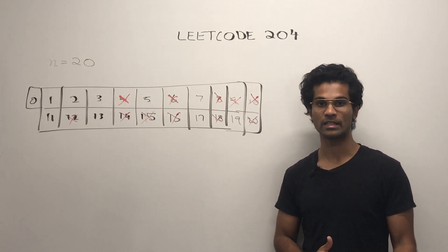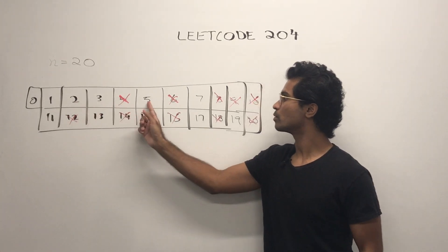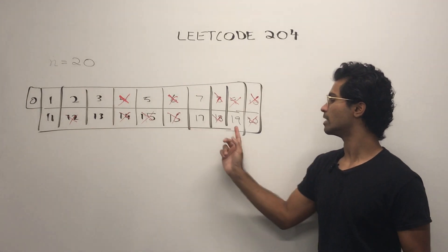So we ran the sieve and we can count our prime numbers. 1, 2, 3, 4, 5, 6, 7, 8.